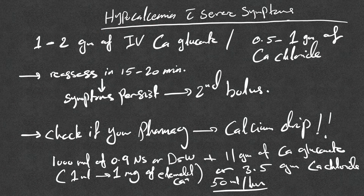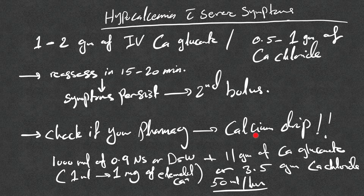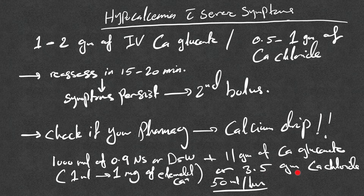For hypocalcemia with severe symptoms, give 1 to 2 grams of IV calcium gluconate (or 0.5 to 1 gram calcium chloride if a central line is available). Reassess symptoms in 15 to 20 minutes; if symptoms persist, give a second bolus. A calcium drip can be prepared by mixing 11 grams of calcium gluconate (roughly 999 mg elemental calcium) in 1000 mL of normal saline or D5W — each mL contains 1 mg of elemental calcium — or 3.5 grams of calcium chloride, infused at 50 mL per hour (50 mg elemental calcium per hour).